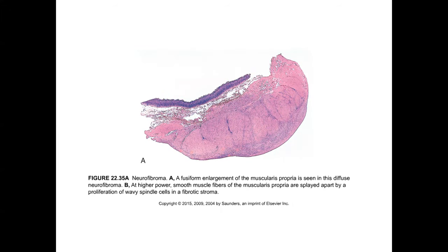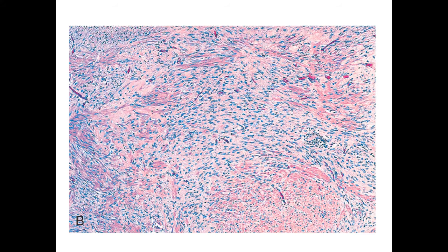Here's a nice example from the textbook showing the morphology and location of neurofibroma. Note that this is really a wall-based lesion rather than mucosal, which is expected because that's where the nerves tend to live. Higher magnification shows a very typical spindle cell morphology that interlaces between the smooth muscle. This can have the appearance of a malignancy; however, the cytology tends to be very bland and the mitotic rate would be low. Of concern is the fact that these lesions can give rise to malignant peripheral nerve sheath tumors as a possibility.